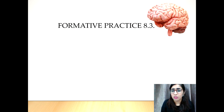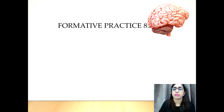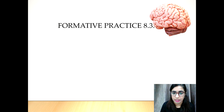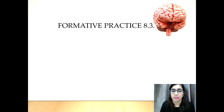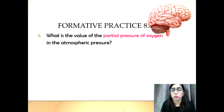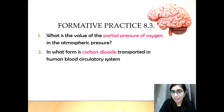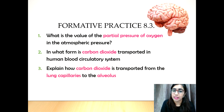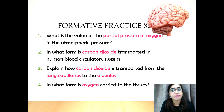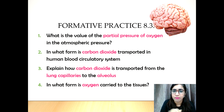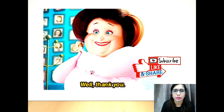With that we are done for subtopic 8.3. I hope you understand this lesson. If not, go back through the video, read your textbook, make your notes, and then come back to test your understanding by answering questions from Formative Practice 8.3 on page 137 of your textbook. The questions are: one — what is the value of the partial pressure of oxygen in atmospheric pressure? Two — in what form is carbon dioxide transported in the human blood circulatory system? Three — explain how carbon dioxide is transported from the lung capillaries to the alveolus. Four — in what form is oxygen carried to the tissues? Thank you for watching, please like and subscribe.